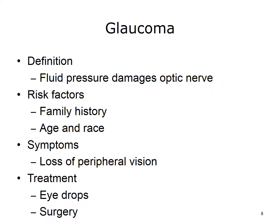Glaucoma is the leading cause of blindness in the U.S. It usually occurs when the fluid pressure inside the eyes slowly rises, damaging the optic nerve. Often, there are no symptoms at first, but a comprehensive eye exam can detect it. People at risk include African Americans over age 40, other people over age 60, especially Mexican Americans, and people with a family history of glaucoma. Treatment for glaucoma includes prescription eye drops and/or surgery.